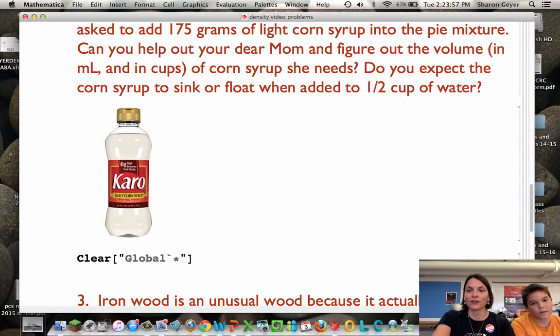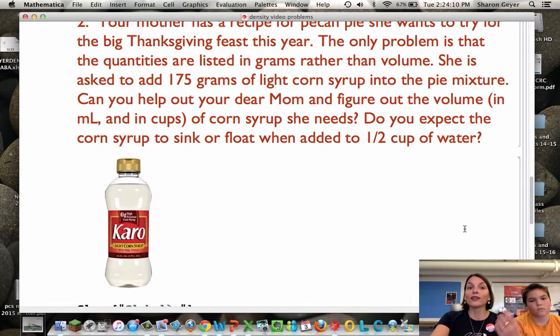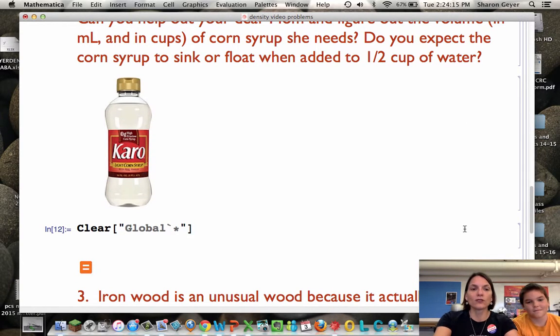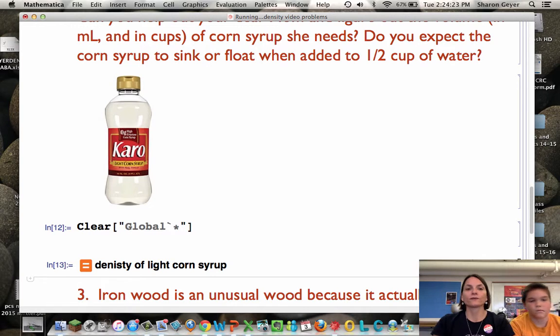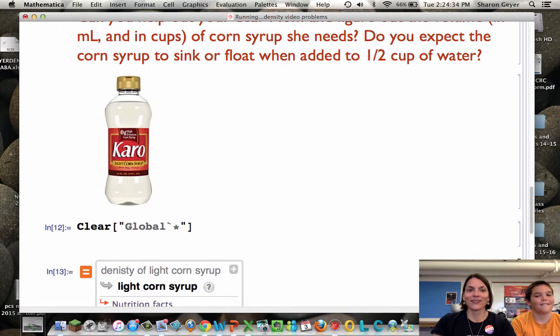So first thing we're going to do here is we're going to use our clear global statement, clearing out all the values we've already stored, because we need to use the same variables over and over. We know the mass of our substance, and we can look up the volume using this same technique. So let's do that first. Equals density of light corn syrup. Let's see what we get. Shift-return. Nothing. It'll give it a minute. No. It's thinking. Here it is. Light corn syrup.